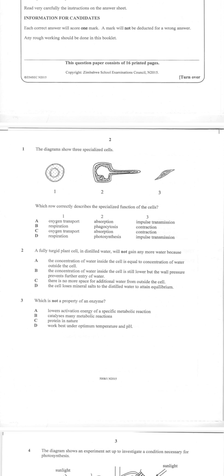Number one is a red blood cell, number two is a root hair cell, and number three is a muscle cell. The question asks us which role correctly describes the specialized function of the cells.